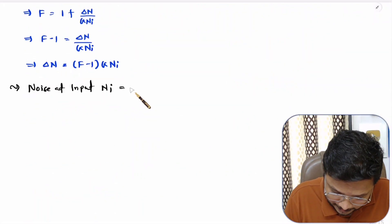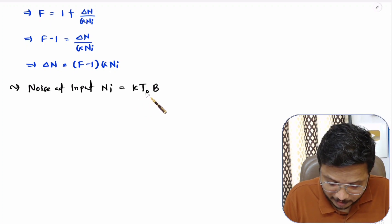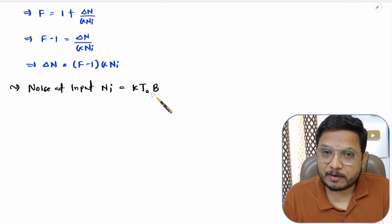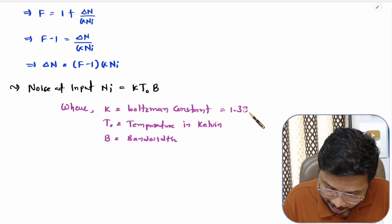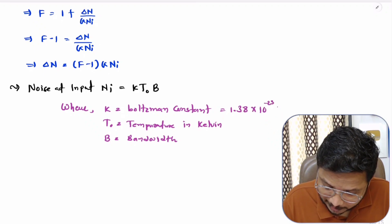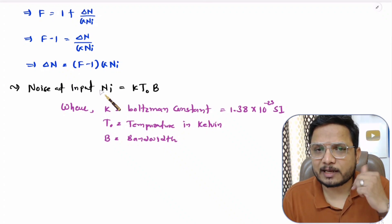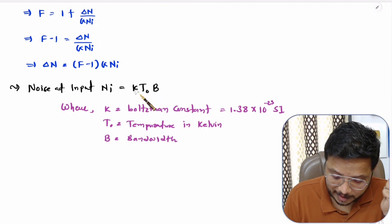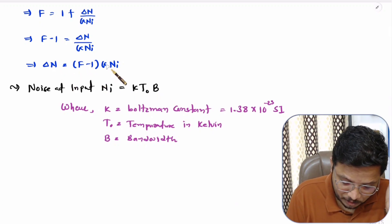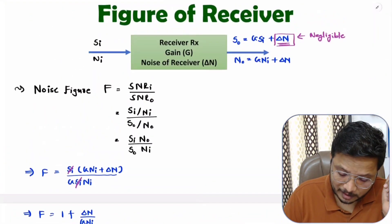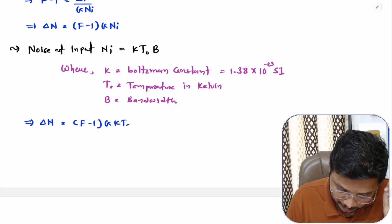Noise at input equals k × T0 × B, where k is Boltzmann's constant, T0 is temperature in Kelvin, and B is the bandwidth of the received signal. The value of Boltzmann's constant is 1.38 × 10⁻²³ in SI units. By placing these values one can identify noise at input — if you increase temperature, noise at input will increase. So delta_n = (F − 1) × G × k × T0 × B.